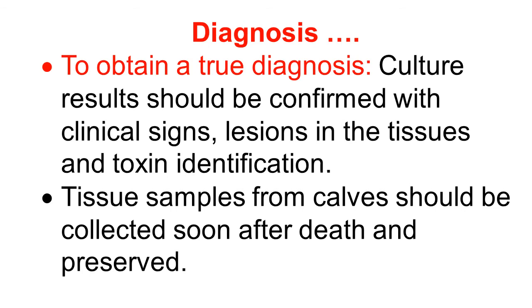Continuing with diagnosis: simply identification of the organism from the faeces is not a confirmed diagnosis. To obtain a true and confirmed diagnosis, the cultural results should be confirmed with characteristic clinical signs, lesions in the tissue, and toxin identification. All of this will help to confirm the diagnosis. Generally, tissue samples from the calves or the animal should be collected immediately after death and preserved for diagnosis.